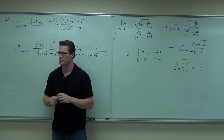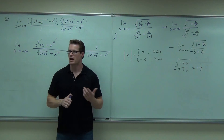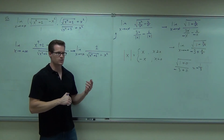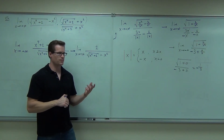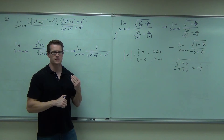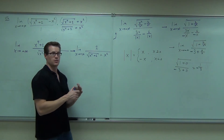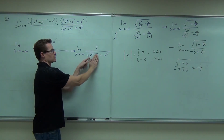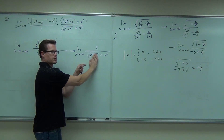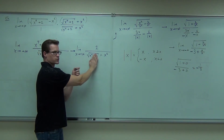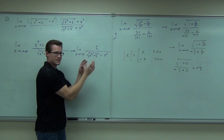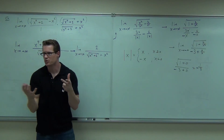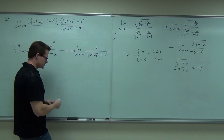Now, don't trick yourself here. The largest power in the denominator is not x to the 4th. What is it? The way you can think about it: cover up the rest of it, look at the largest term. What's the square root of x to the 4th? It's x squared. That's your largest power — it's inside a square root. So divide everything by that.